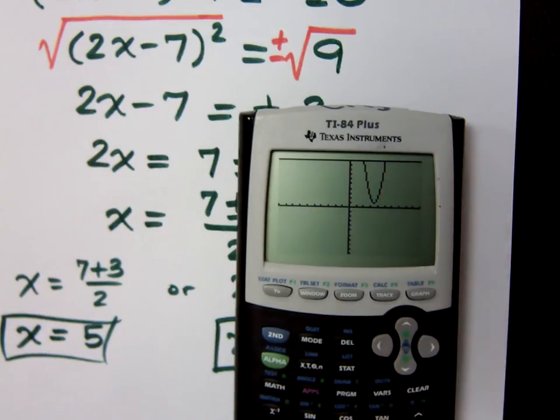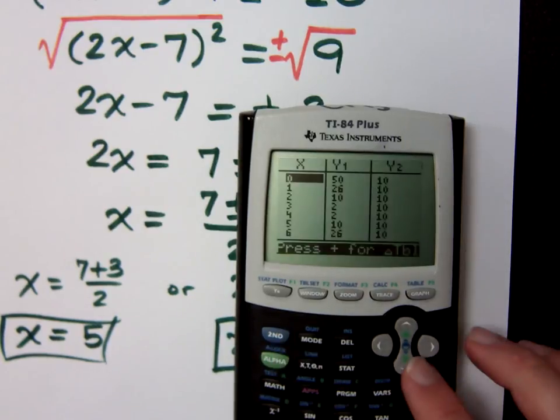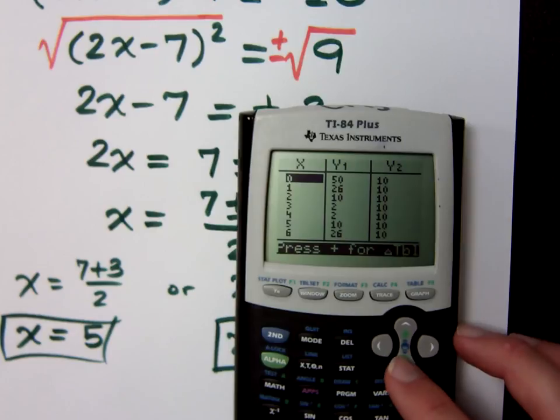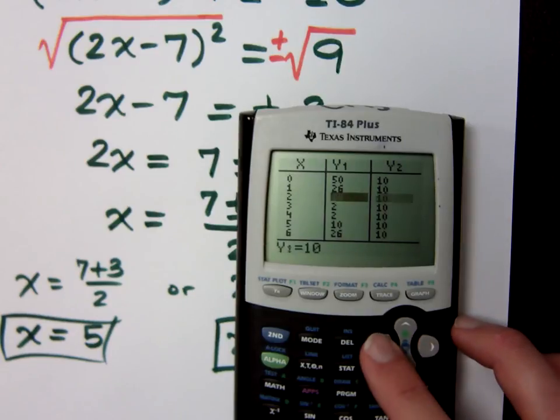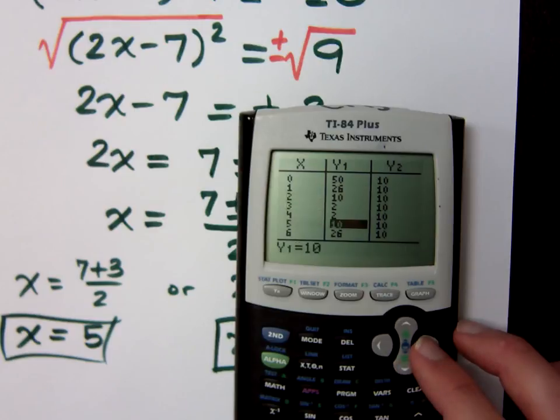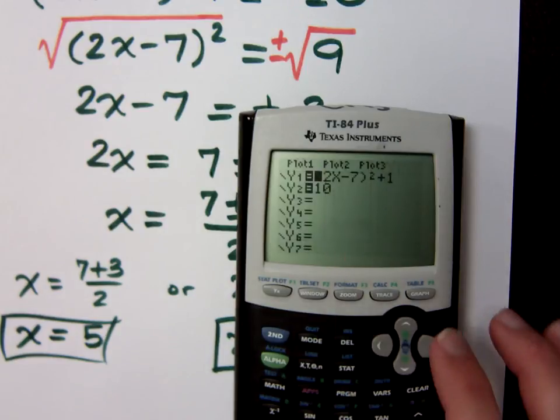Go to your table, because my solutions are nice. They're 5 and 2, right? If I go to my table, so second graph, you can find out where these y values are the same. Look at this. When x is 2, the y values are both 10. When x is 5, they're both 10 as well. Do you all agree? Pretty cool. Did you know that you could have done that on the last example that we had?